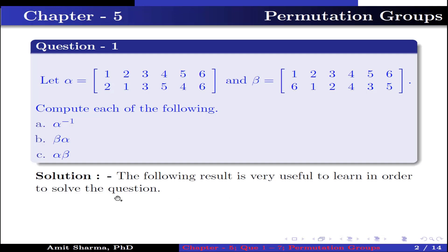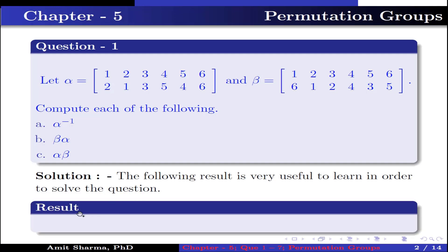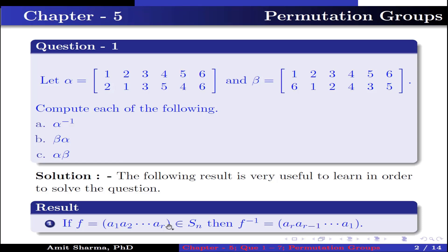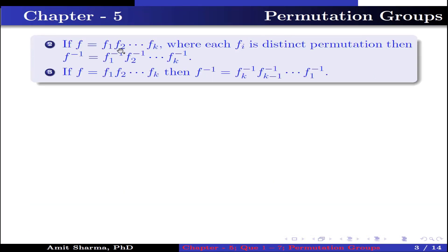The following result is very useful to learn in order to solve the question. Result: if f is a permutation (a1, a2, ..., ar) — meaning a1 has image a2, a2 has image a3, and so on, ar-1 has image ar and ar has image a1 — this is known as an r-cycle permutation in Sn. Then f inverse is the permutation (ar, ar-1, ..., a1), meaning we just reverse the cyclic permutation. If f equals a product of distinct permutations f1, f2, ..., fk, then f inverse equals f1 inverse times f2 inverse up to fk inverse. If they are not distinct, then f inverse is fk inverse times fk-1 inverse up to f1 inverse.